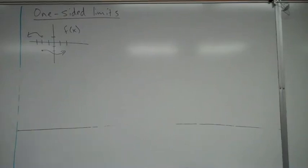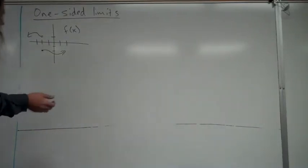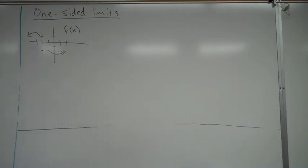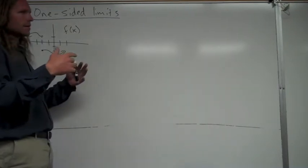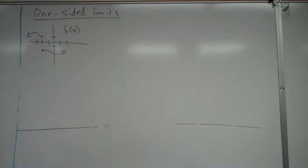Let's go ahead and take a look at one-sided limits. Up to this point, when you've been looking at limits, you've always been looking from both sides at the same time. And both sides had to go to the same y-value in order for the limit to exist.